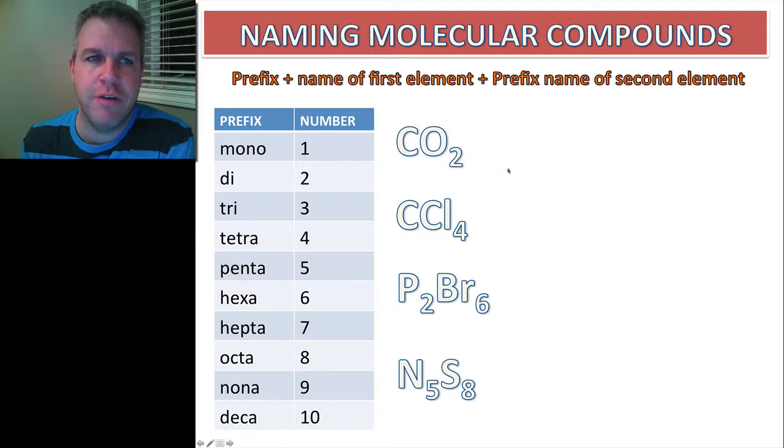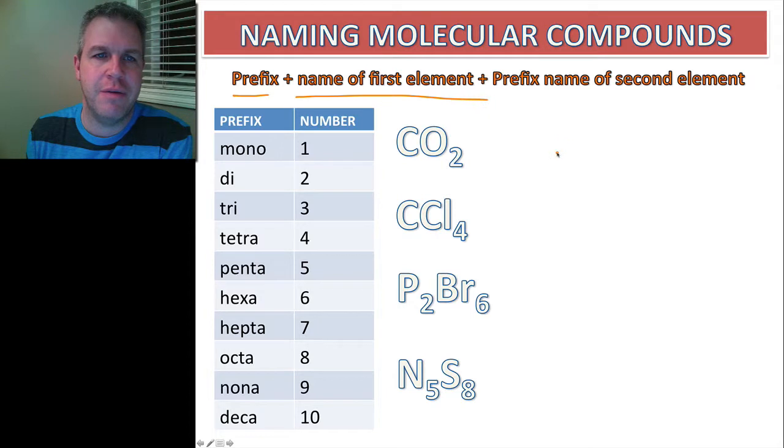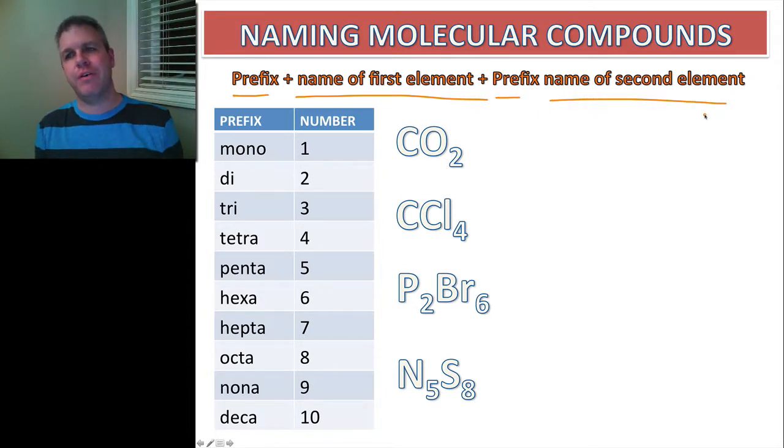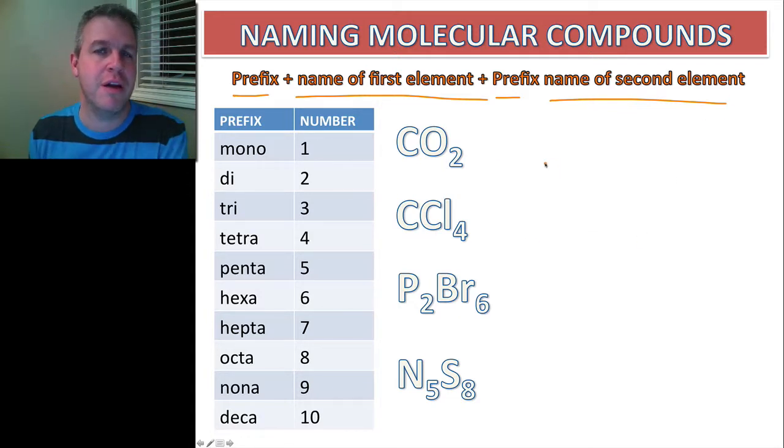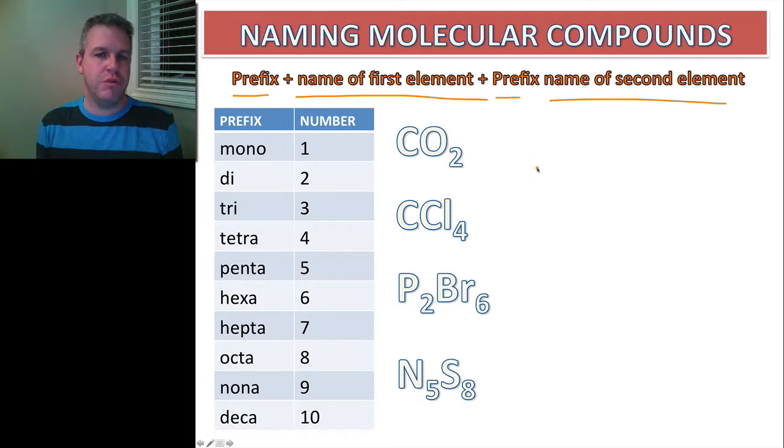Okay, so when we name these we're going to put the prefix first, then the name of the first element, prefix name of the second element, and then prefix name of the third element if there is a third one, because there can be more than three, there might not just be two non-metals put together.